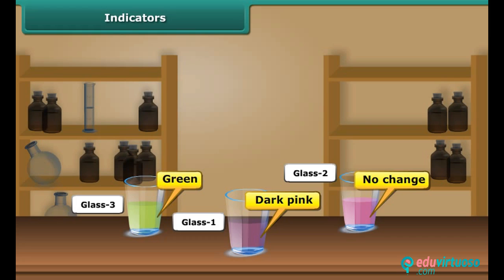The color in the third glass changes to green. Thus we can conclude that the indicator solution obtained from China rose turns bright pink in the presence of an acid and green in the presence of a base. We can put a drop of this indicator solution in any desired food item to know whether it is acidic or basic.